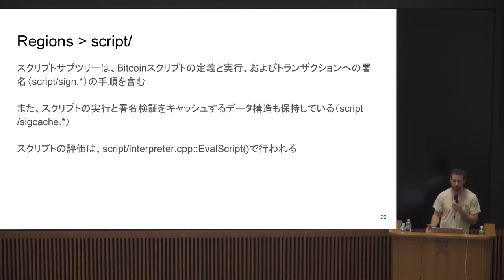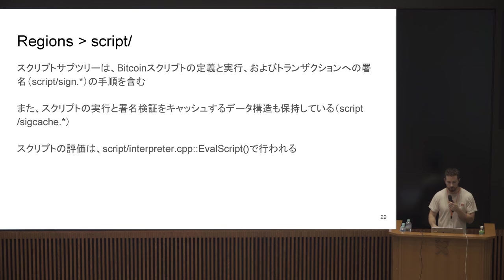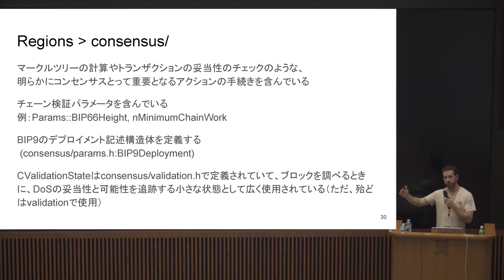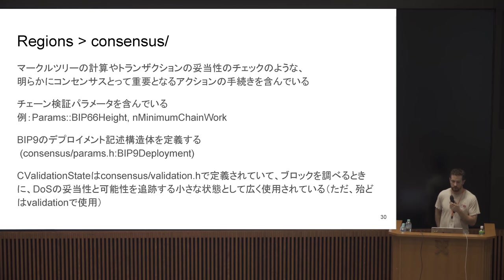The script subtree contains procedures for defining and executing Bitcoin scripts, and maintains structures which cache script execution and signature validation. One of the most interesting parts is a function called EvalScript, which is basically the script interpreter. Consensus is the aforementioned weirdly named region — an attempt to consolidate what dictates consensus, though almost everything in Bitcoin D dictates consensus. It contains various parameters, defines the BIP9 deployment struct, and CValidationState, which is a piece of state passed around various places to accumulate DOS scores.